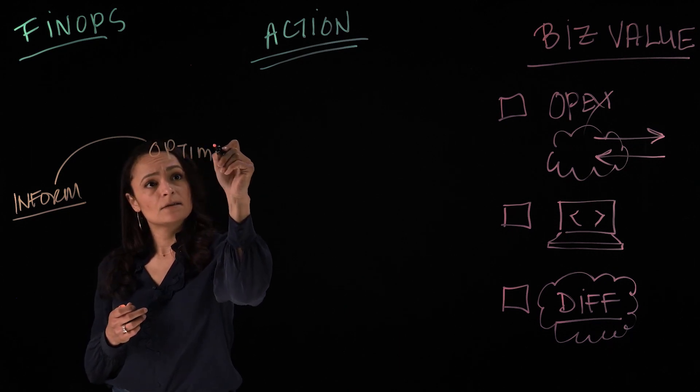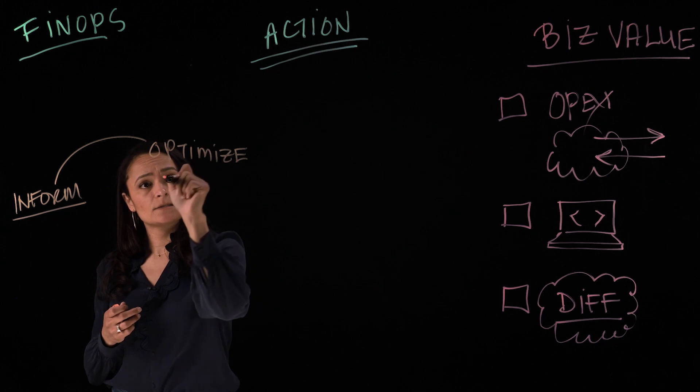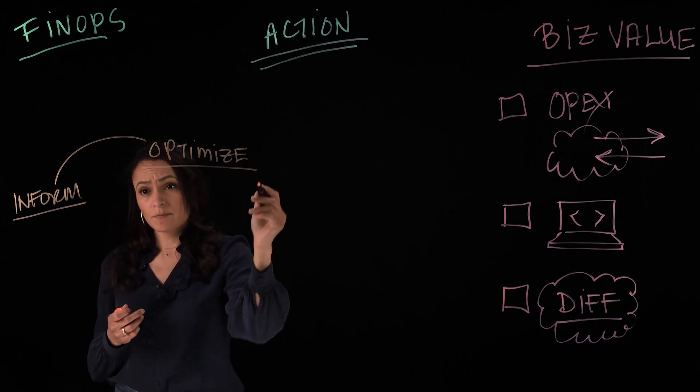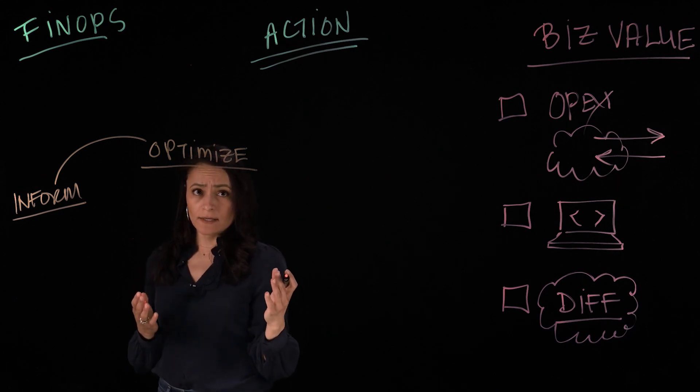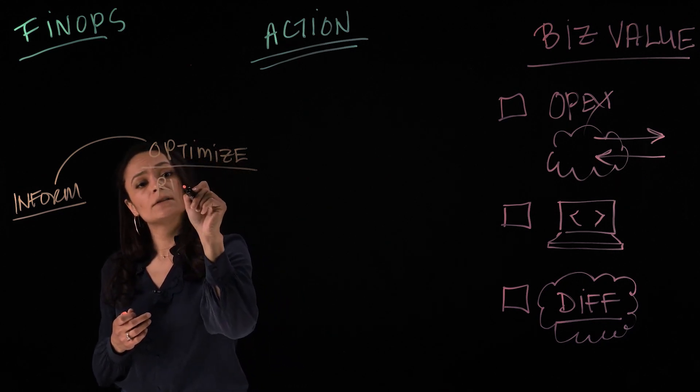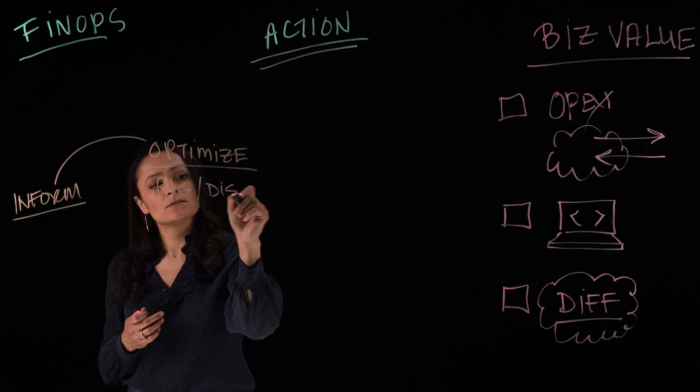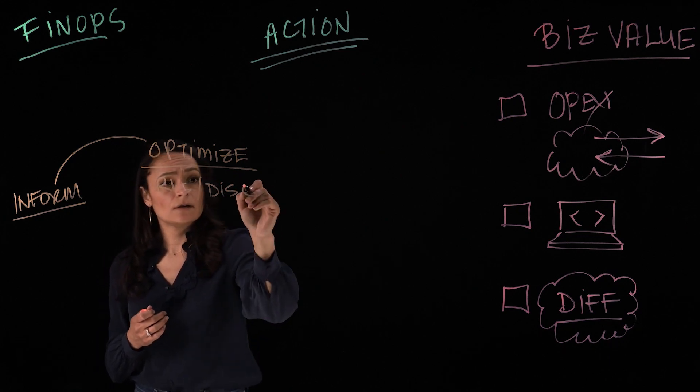The second is Optimize. This is about actually giving applications the resources they need when they need it, and leveraging RIs and discounts to further drive those efficiencies.